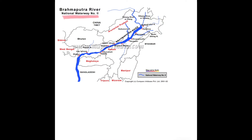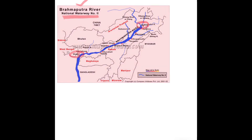National Waterway Number 2 is on the Brahmaputra river, stretching from Sadia to Dhupri in Assam state. It is one of the major freight transportation waterways of northeast India.